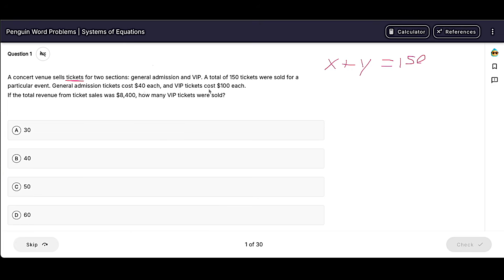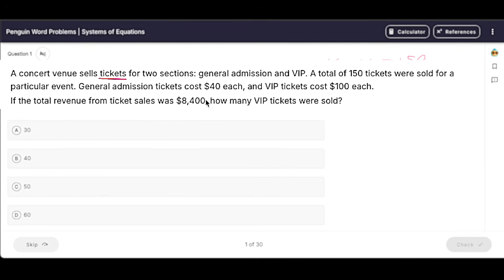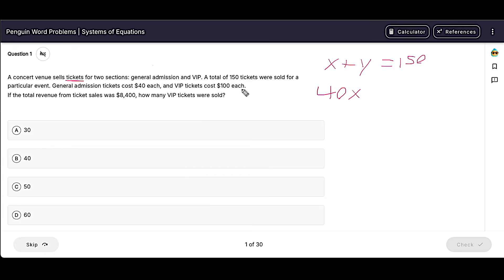We also get the value equation. General admission tickets are $40 each. I was saying that general admission is X, so that would be 40X. And VIP tickets cost $100 each, so plus 100Y.